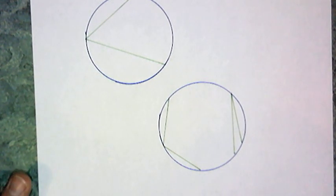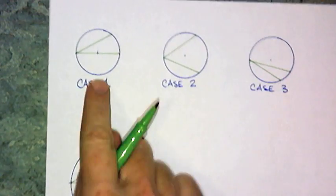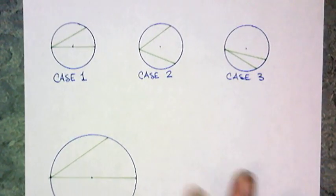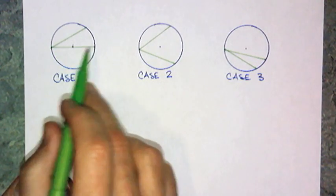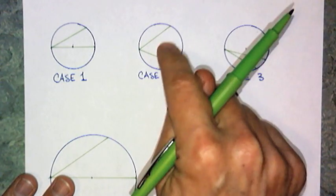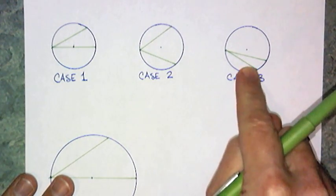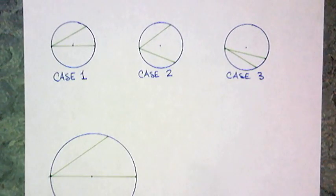Now how can we measure inscribed angles? Well, inscribed angles basically come in three cases. An inscribed angle could have one chord be a diameter, the center could be in the interior of the angle, or the center could be on the exterior of the angle. There's no other possibilities.